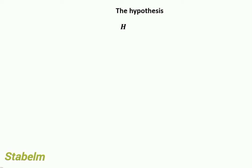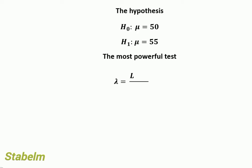First, we state the hypotheses: H₀: μ = 50 versus H₁: μ = 55. The most powerful test formula is given by the likelihood ratio λ = L(μ₀) / L(μ₁) ≤ k, where L(μ₀) is the likelihood under the null hypothesis and L(μ₁) is the likelihood under the alternative hypothesis.